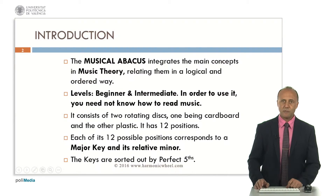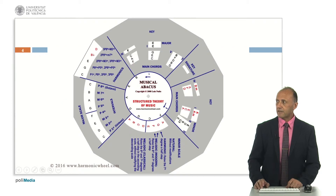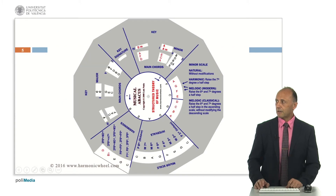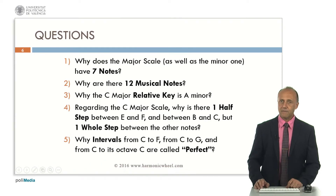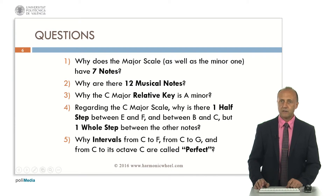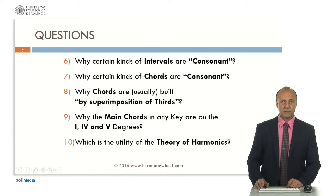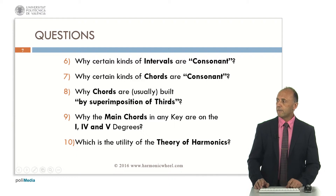I explain the musical abacus in another presentation, covering its main characteristics. This is the musical abacus and I finish that presentation with some questions which may arise when one learns music theory, such as why does the major scale have 7 notes, why are there 12 musical notes, and so on. In another presentation I explain the main concepts in music theory, and now I am going to answer these questions.